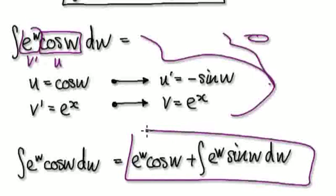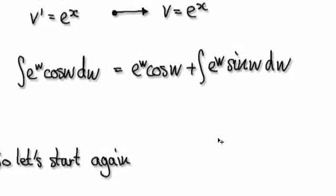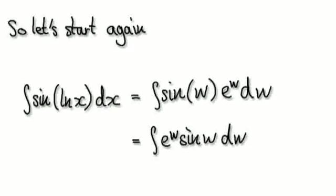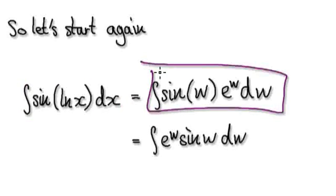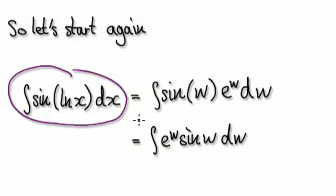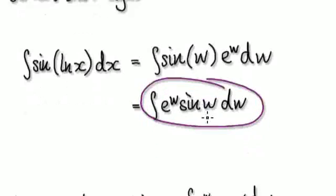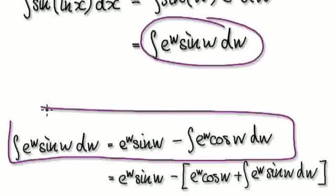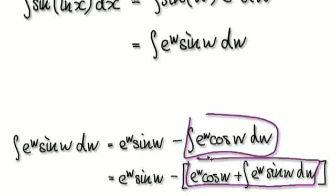Let's recap from the start. We were trying to evaluate the original integral. Substitution led us to the simplified integral. To integrate that, we needed to evaluate the inner integral. Using integration by parts led us to an expression, and evaluating the remaining piece gave us this result here.